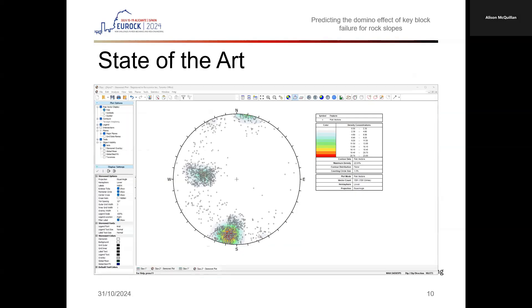Looking at the state of the art, in a kinematic analysis, all mapped defects are often imported into the one grid file or stereo net, resulting in the assumption and analysis that all defects will intersect with each other. In reality, this is not the case, as defects mapped in some sections of the pit slope will never interact or intersect with defects mapped in another section of the pit slope.